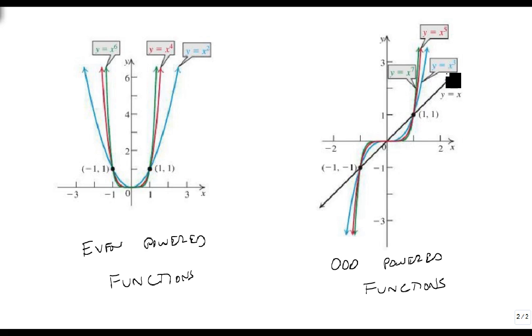Whereas for our odd ones, so here's y equals x, here's our x cubed, here's our x to the fifth, and our x to the seventh. Notice that in every case, it starts high on the right side, but when it gets to the left side, it's low.